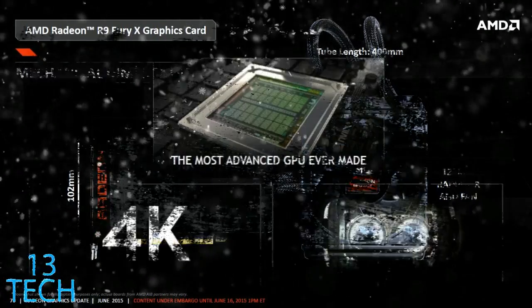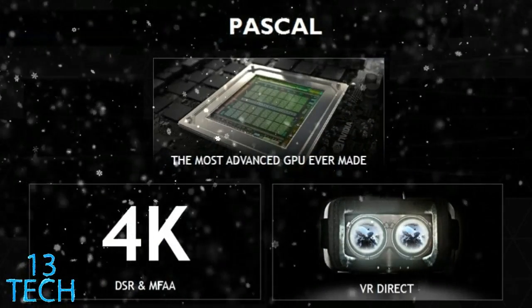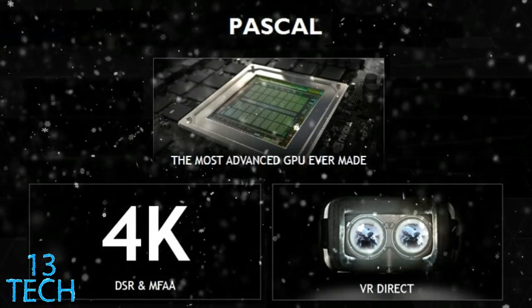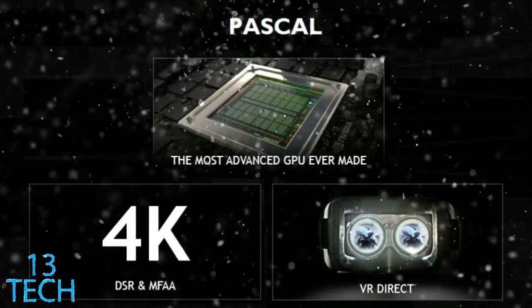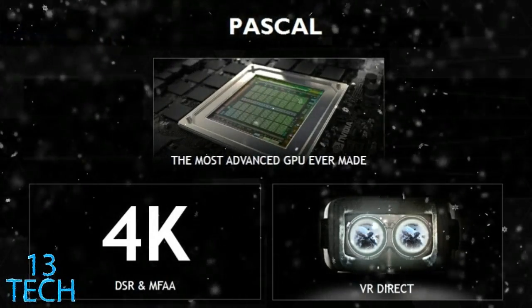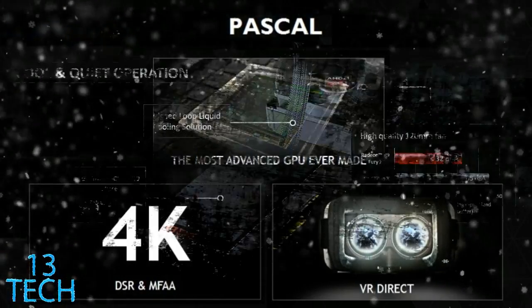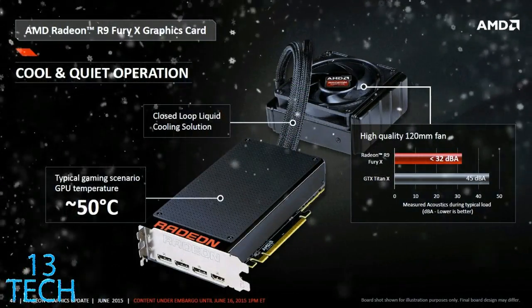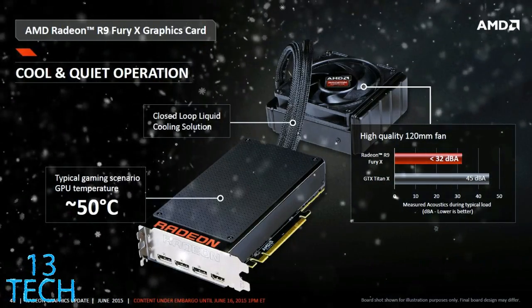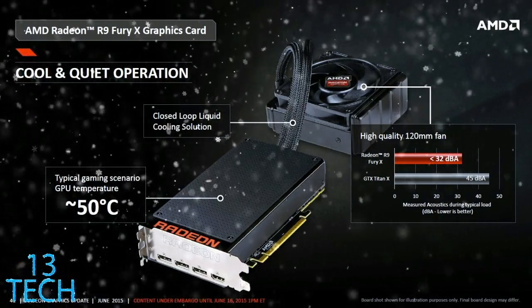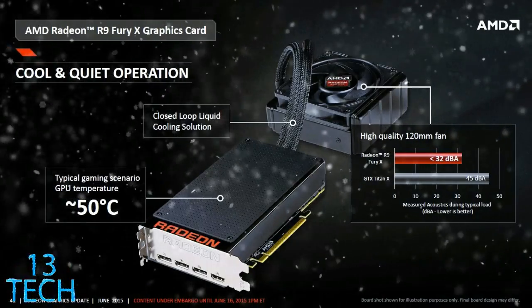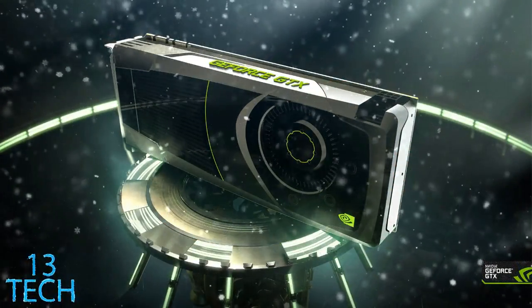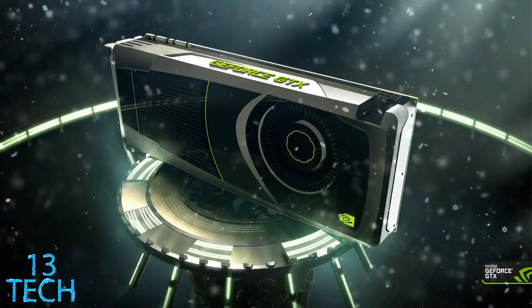More specifically, the NVIDIA card managed 56.8 frames per second during the normal batch, 50 frames per second during the medium batch, and 43.7 frames per second during the heavy batch. On the AMD front, the Radeon R9 Fury X cranked out 52.9 frames per second during the normal batch, 45.3 frames per second during the medium batch, and 37.7 frames per second during the heavy batch.